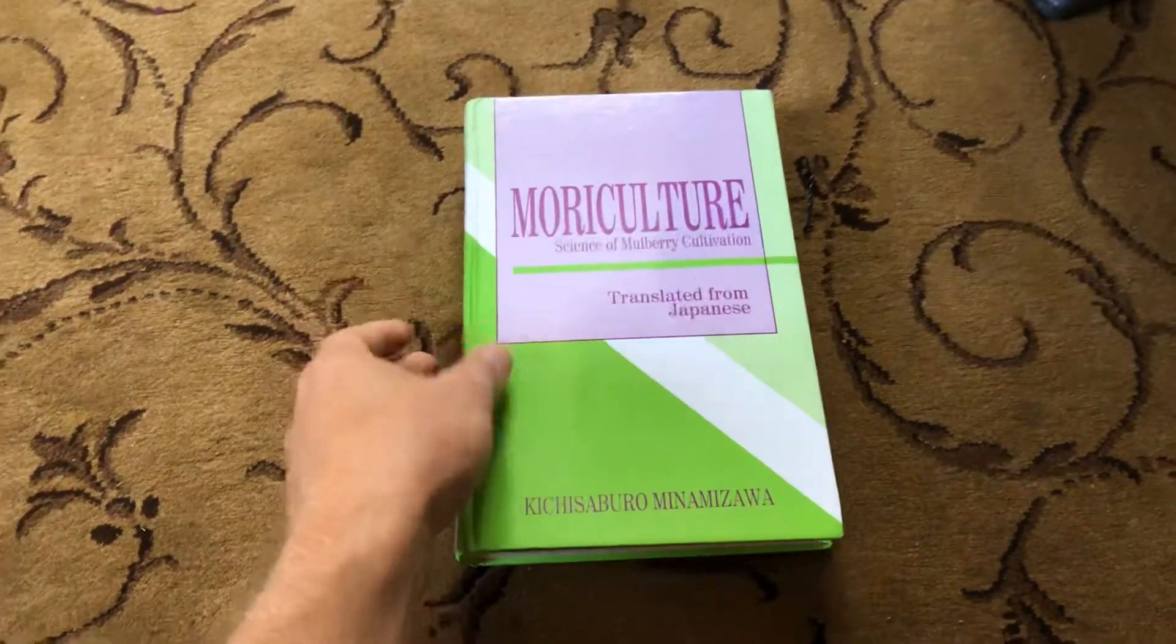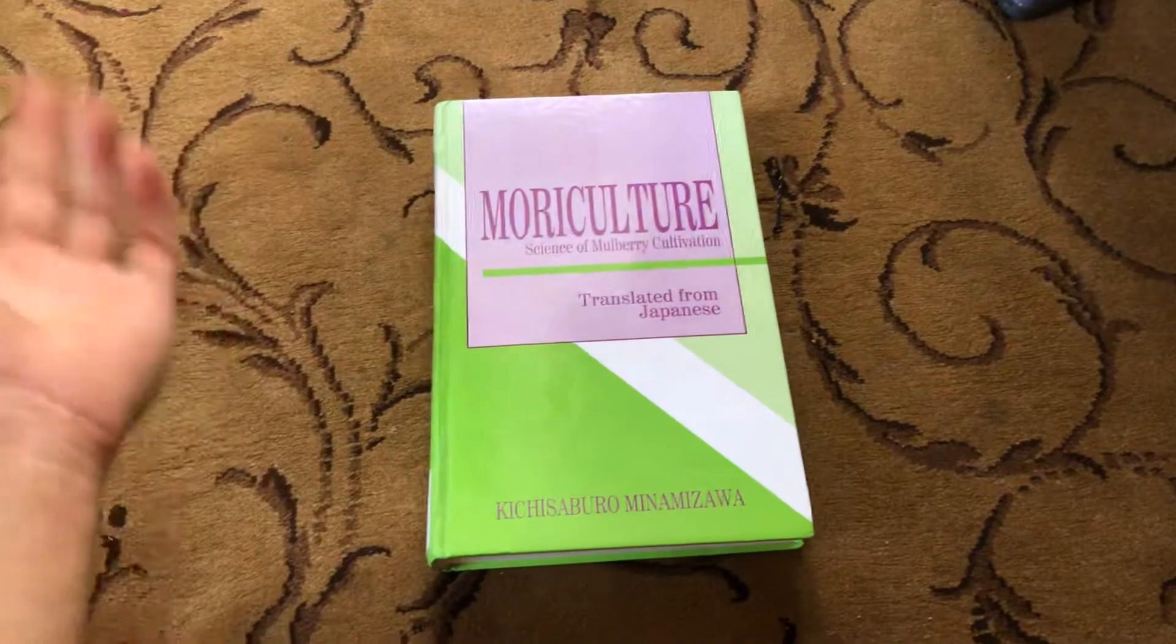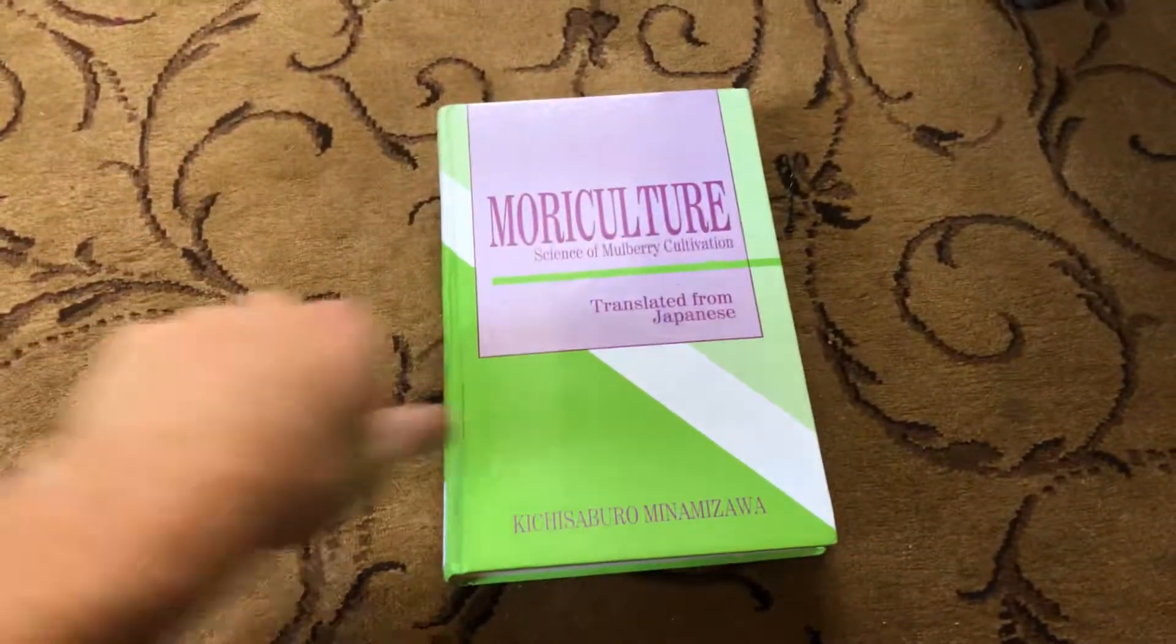But it's all about mulberry. That's the Morus genus, which is what mulberry is in. Moriculture is the cultivation of it.